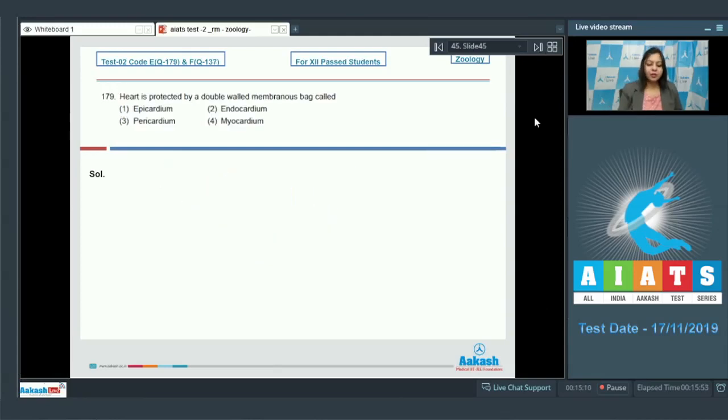Question 179: Heart is protected by a double walled membranous bag called epicardium, endocardium, pericardium, and myocardium. The heart wall contains three layers: the epicardium, the middle layer which is myocardium, and the inner layer which is the endocardium.